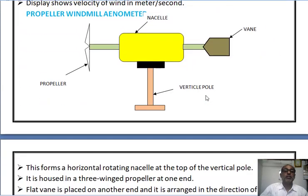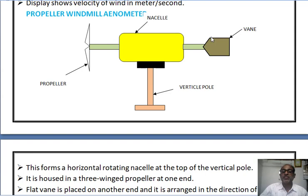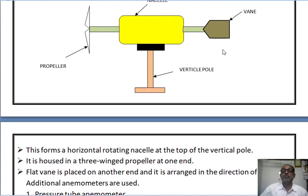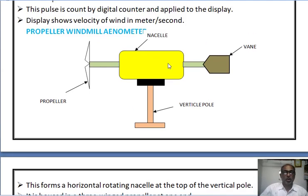Next is the propeller anemometer, which has a horizontal rotating axis placed at the top of a vertical pole. It is housed in a three-inch propeller at one end, and a flat vane is placed at the other end, arranged in the direction of the vane. Additionally, other types of anemometers are used: first, the pressure tube anemometer; second, the hot wire anemometer; and third, the gust anemometer.